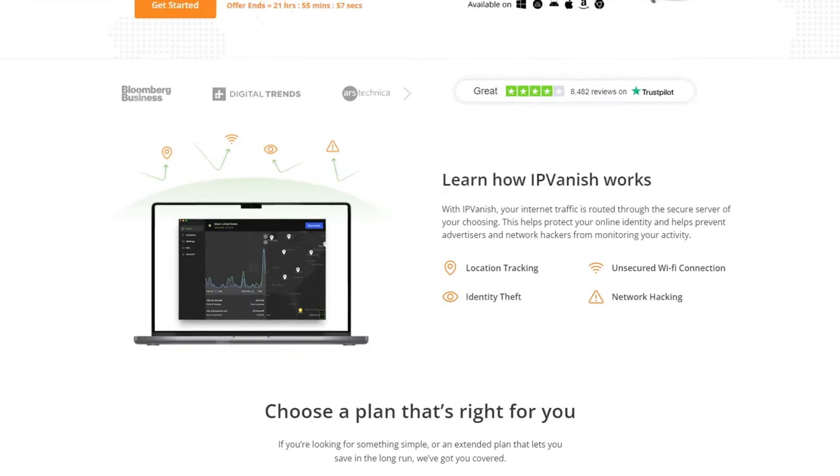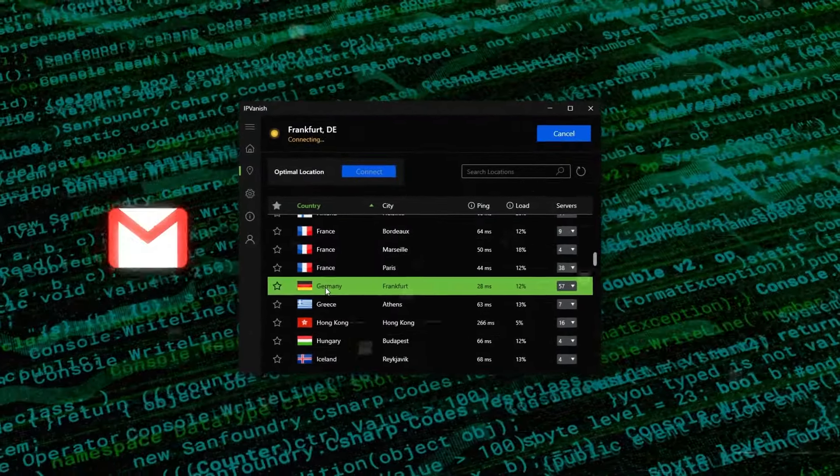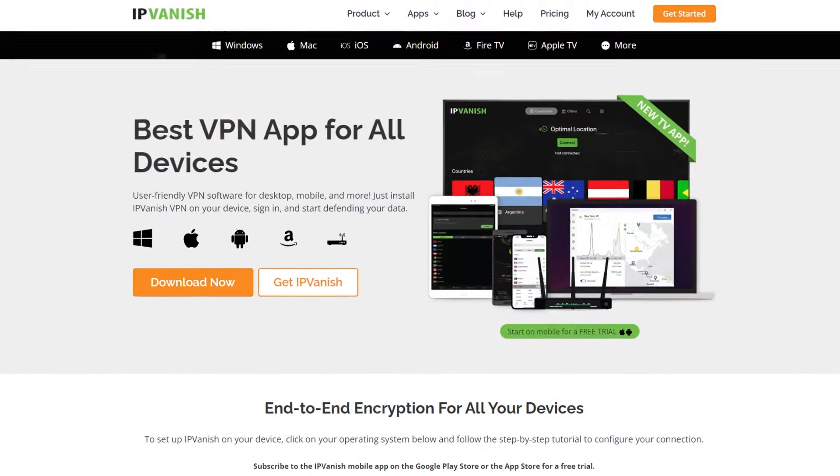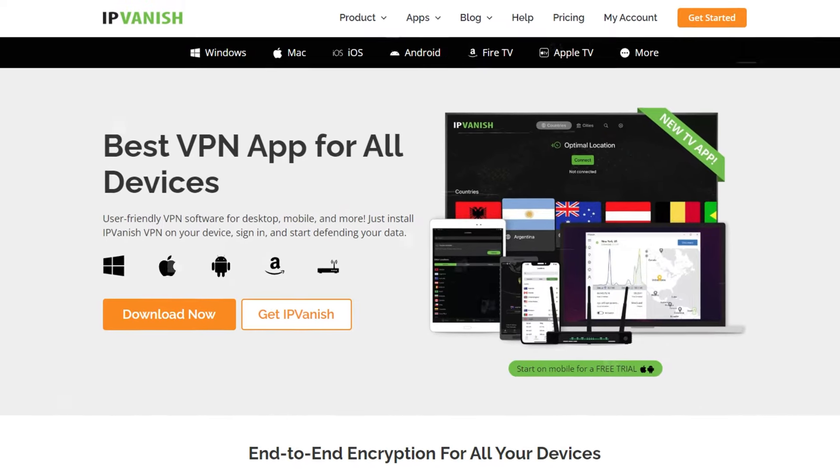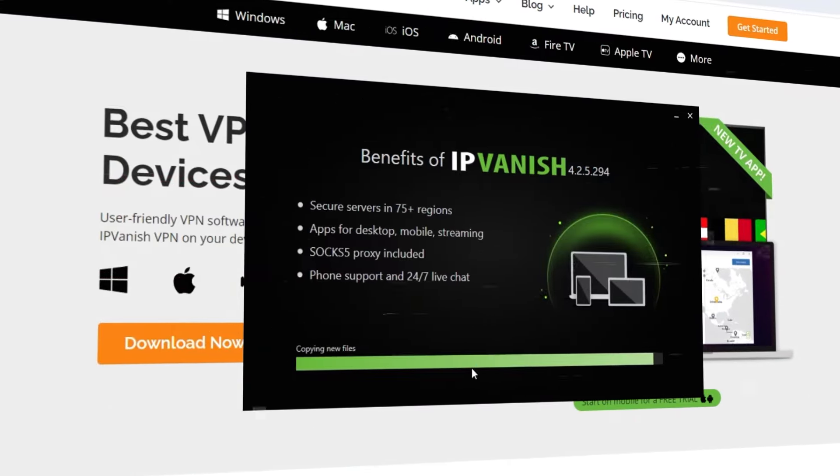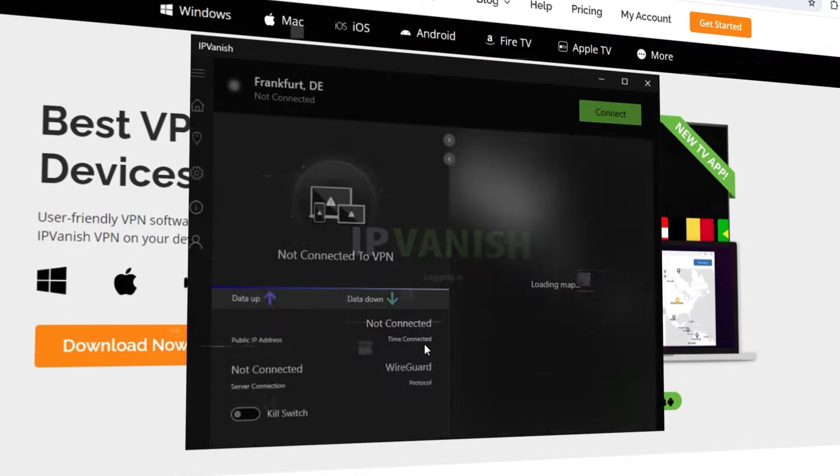It wraps your internet connection in a layer of strong encryption, making sure everything you do online, from checking your emails to banking, stays private and away from nosy eyes. No matter what gadget you're using, be it a Windows laptop, a Mac, your iPhone, an Android device, or even an Amazon Fire Stick, IPVanish makes getting a secure and unrestricted internet connection a breeze.